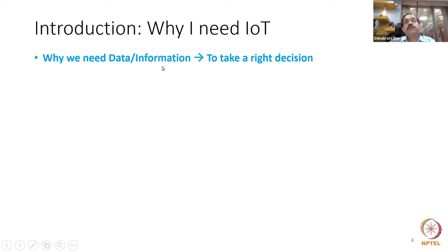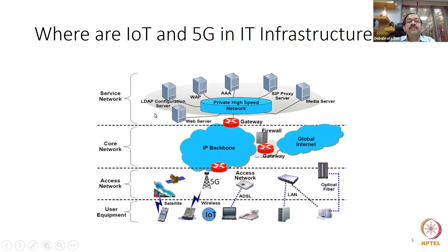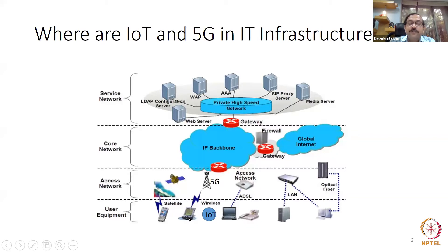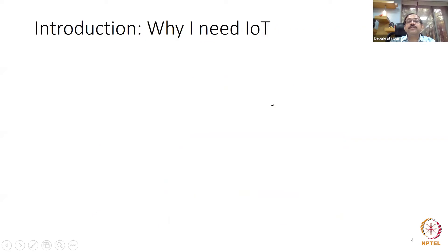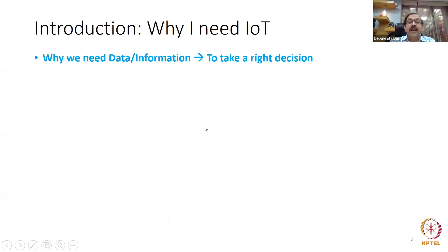Who takes the decision in this world? All information has to go to the cloud or data centers, as shown in the previous figure. Algorithms like ML and AI are running there, and they take the decisions on what to select. IoT devices or the network don't take decisions — IoT devices send data and information through the network, and algorithms here take the decisions, including medical algorithms.